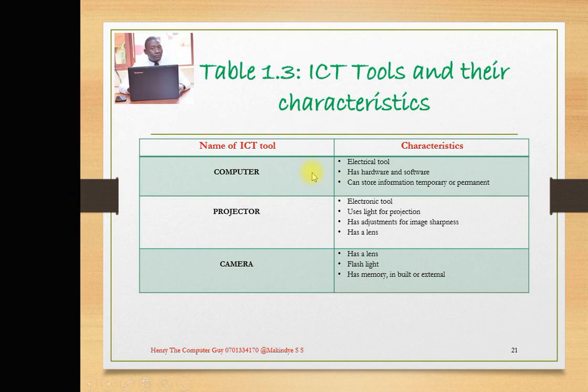A computer can also store information either temporarily or permanently. It stores information temporarily on the RAM — the Random Access Memory — which holds information for a short period of time. But information can be stored permanently on a memory card, hard disk, or flash disk, so that even if power goes off, that information is retained.